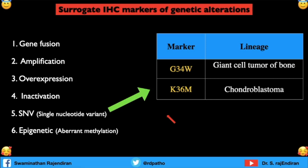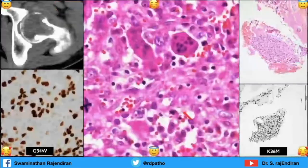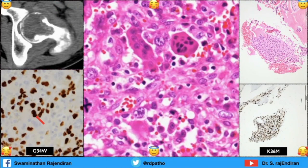Coming to single nucleotide variants — there are only two to remember. Giant cell tumor of bone carries H3F3A G34W mutation, and this is very important: with anti-G34W treatment, all giant cells will disappear. For chondroblastoma, it is H3F3B K36M. You can see the nice nuclear positivity of G34W in giant cell tumor and K36M in chondroblastoma.